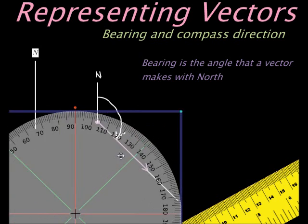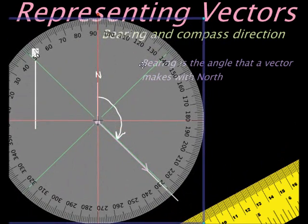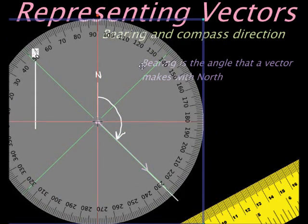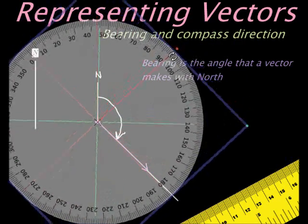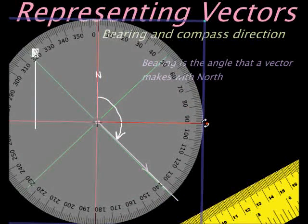And then we use our protractor to measure that angle. So let's put our protractor right there, and obviously since we are measuring from North, the protractor has to be zero at this point. So I'm going to just turn it so that zero is pointing North. There we go.